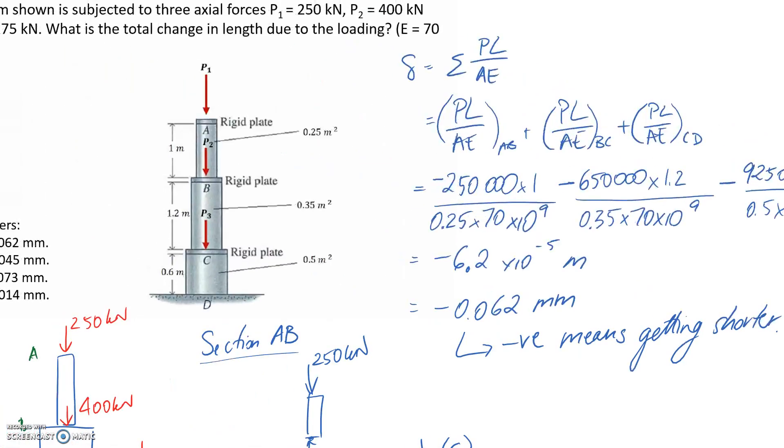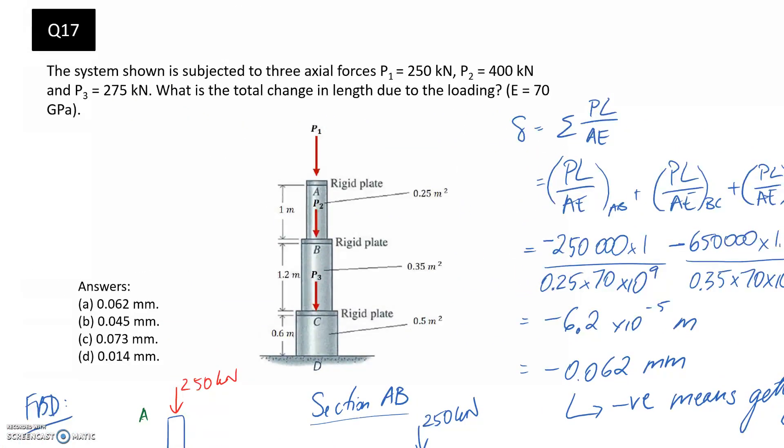Just remember that the negative is telling us it's getting smaller or shorter. Jumping back over here for our answers, it's asking us for the total change in length, so essentially the absolute value. We're saying it's a change in length of 0.062, and that is indeed one of the answers here. So that's what I'd answer this question with.